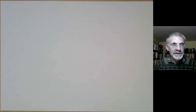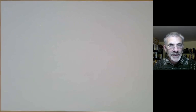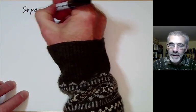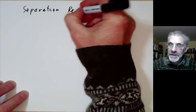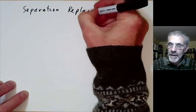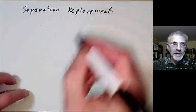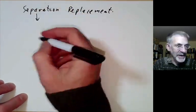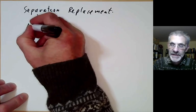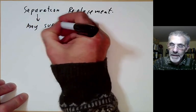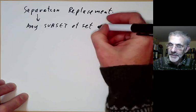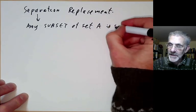This lecture is part of a series of lectures on the axioms of Zermelo-Frenkel set theory and will be about the axioms of separation and replacement, which turn out to be rather closely related. We'll start with the axiom of separation. This says any subset of a set A is also a set.